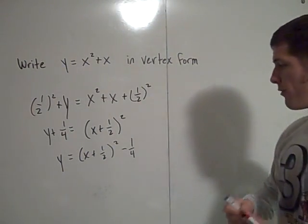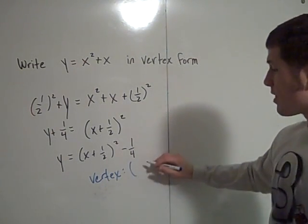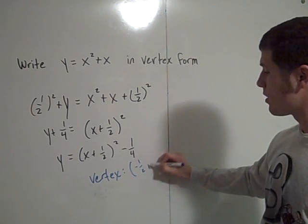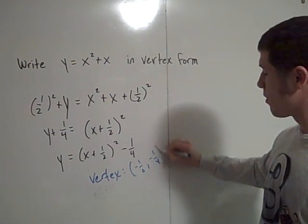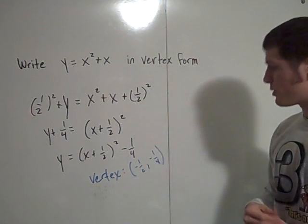So you can say here that the vertex of this equation, the vertex of the graph of this equation is the point negative 1 half, negative 1 fourth. And if you are to graph this, I think you'll see that.